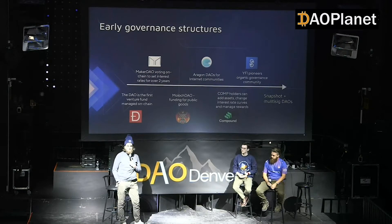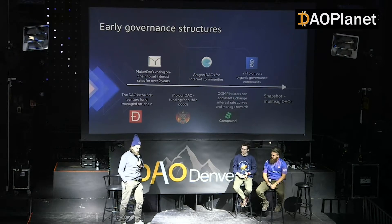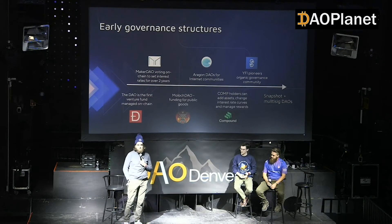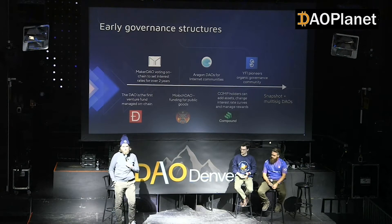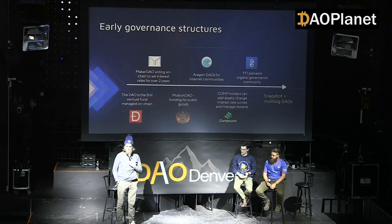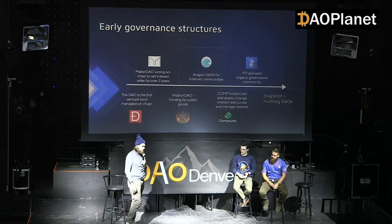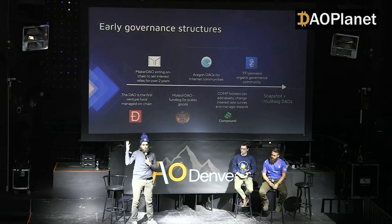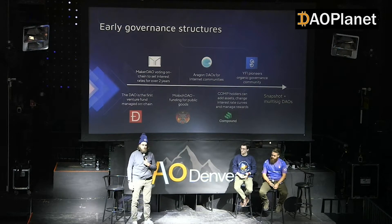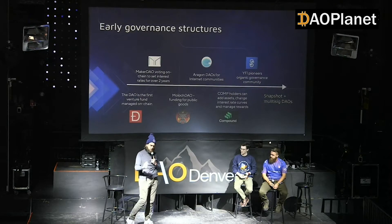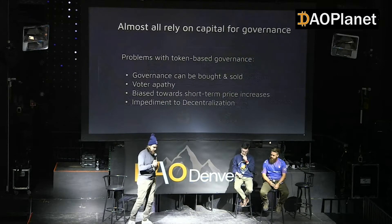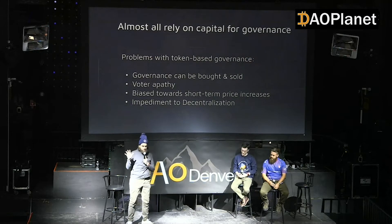Starting in 2020, you see the governance token revolution — first with Compound, giving tokens out to users to govern the protocol. Yearn Finance is another example, really innovating on the distribution front. Over the last year, a plethora of DAOs have popped up, all similarly focused on token-based governance.